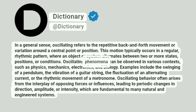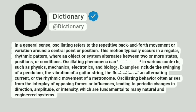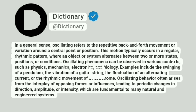Oscillating phenomena can be observed in various contexts, such as physics, mechanics, electronics, and biology. Examples include the swinging of a pendulum, the vibration of a guitar string, the fluctuation of an alternating current, or the rhythmic movement of a metronome.